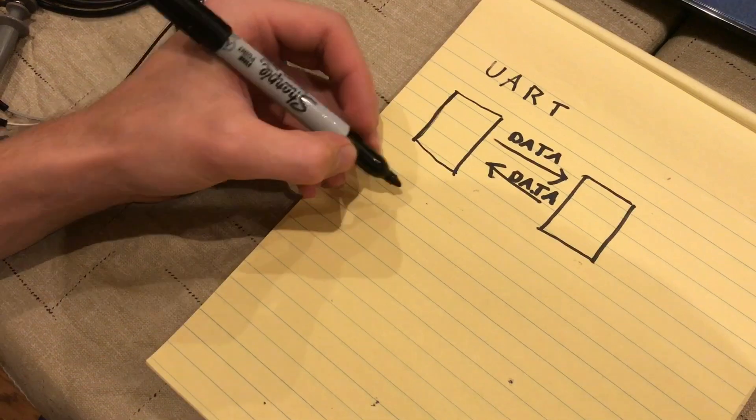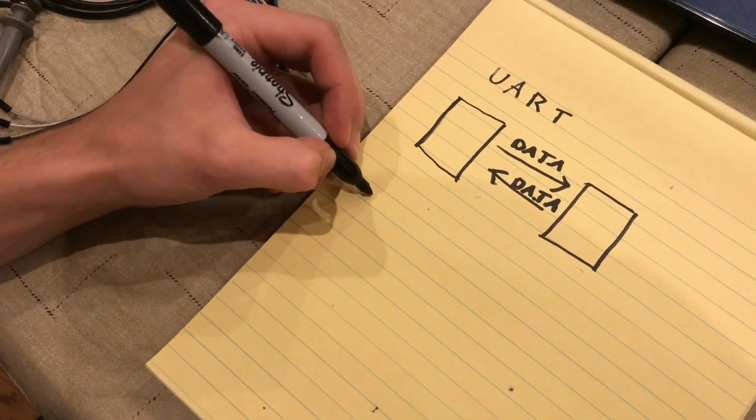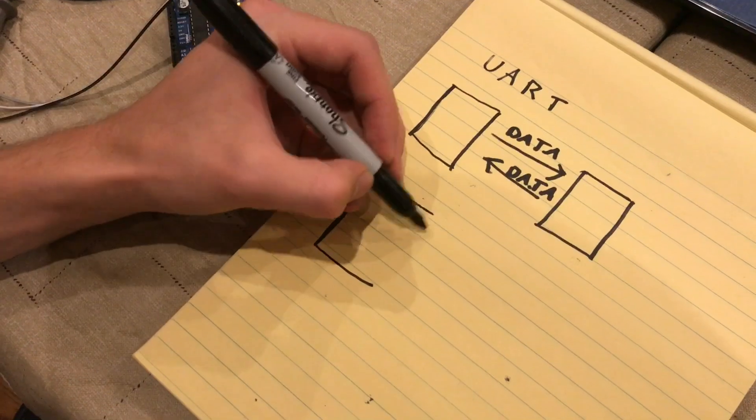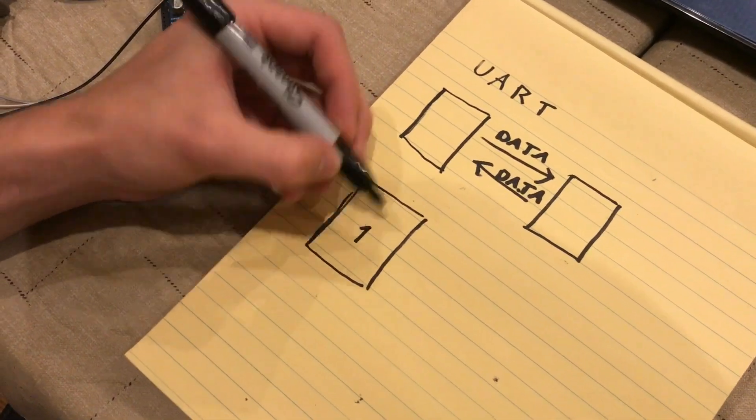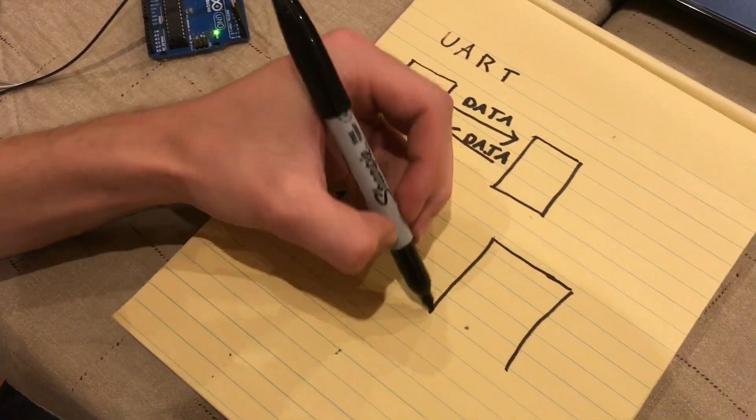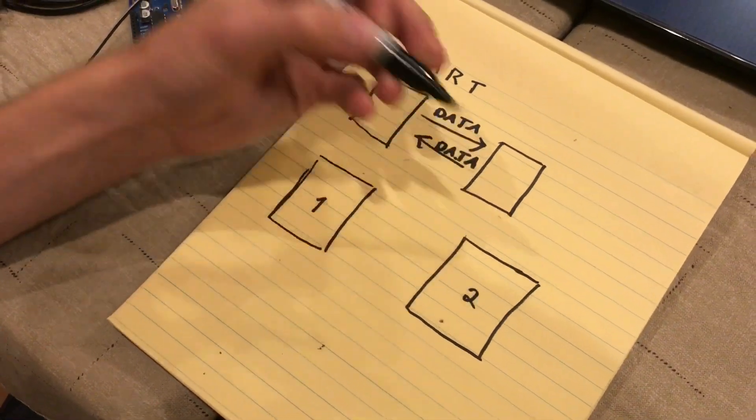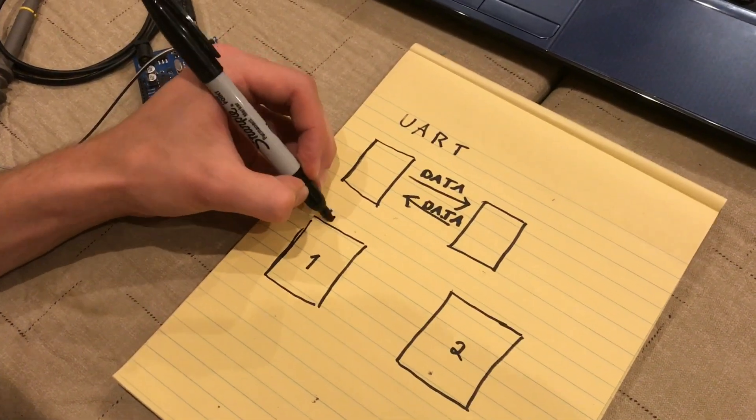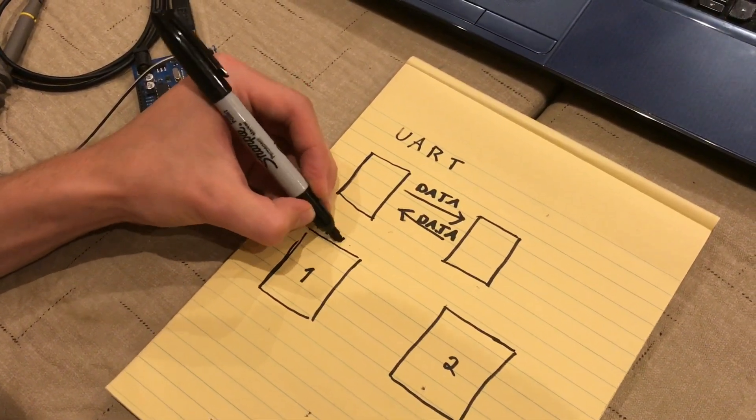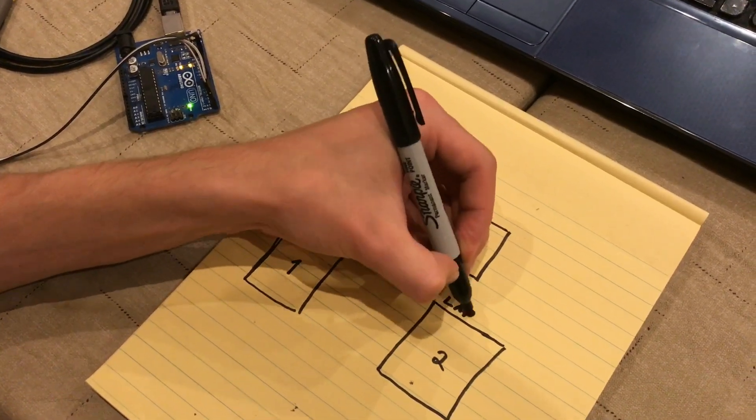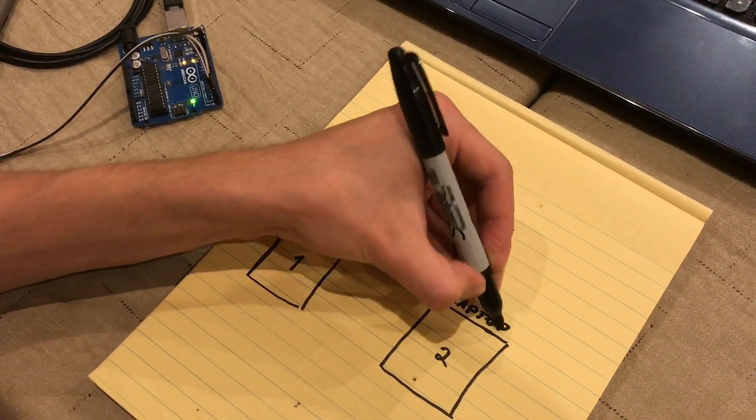So, I'm going to redraw these two devices, except I'm going to put the wires between them now. Here's device one, here is device two, and we can call this the Arduino. And the other one is a laptop, because that's what I've got.